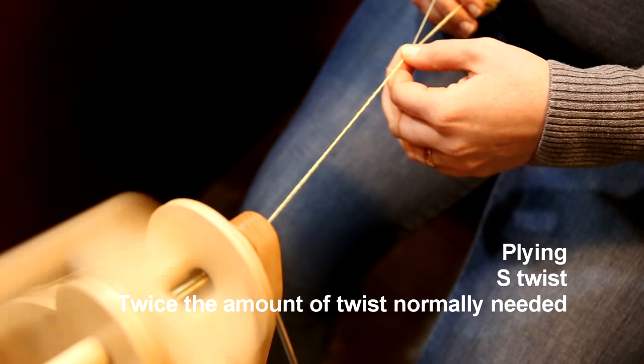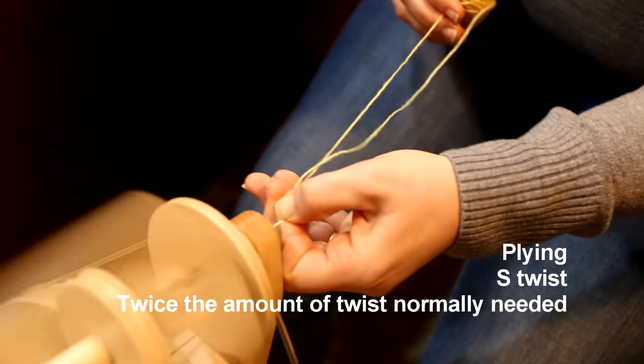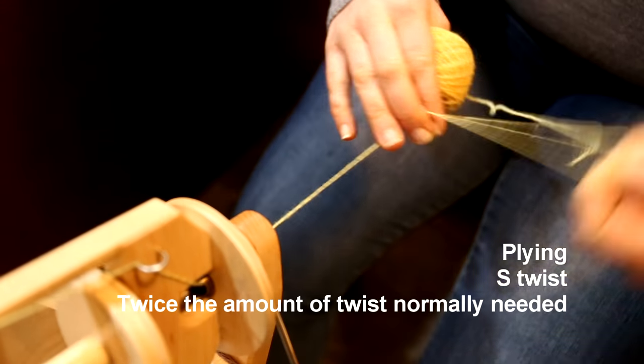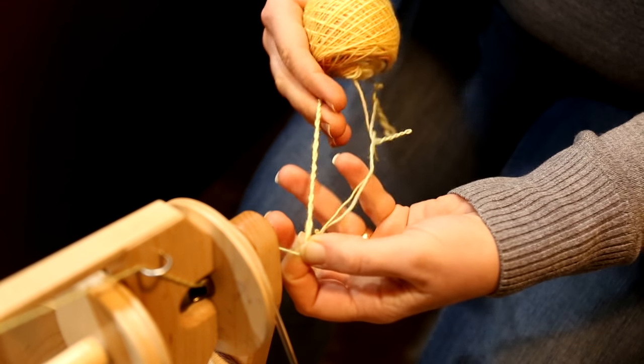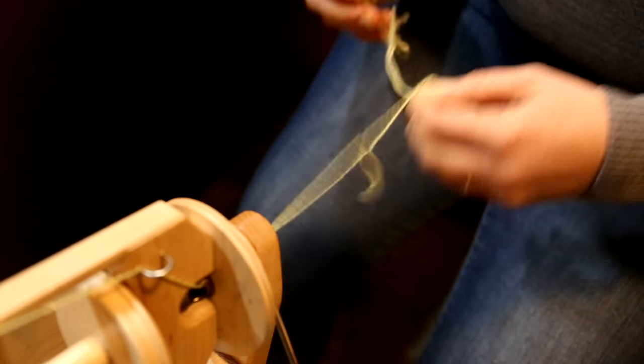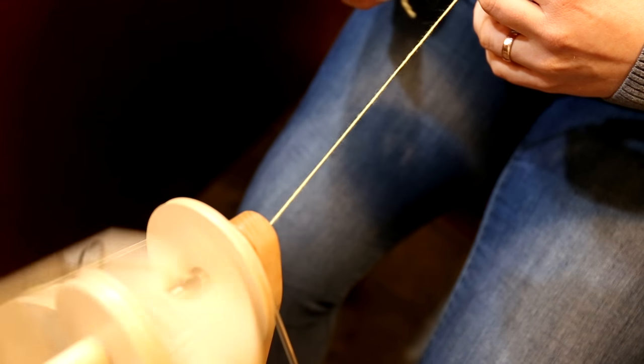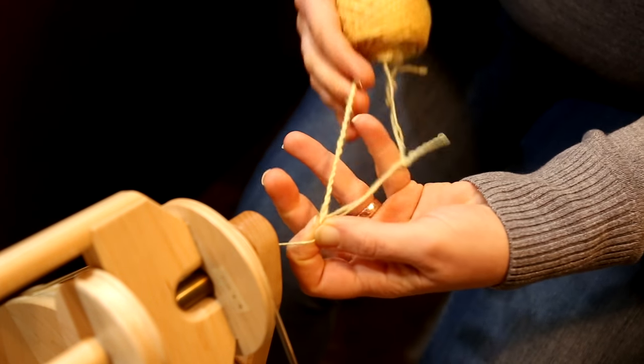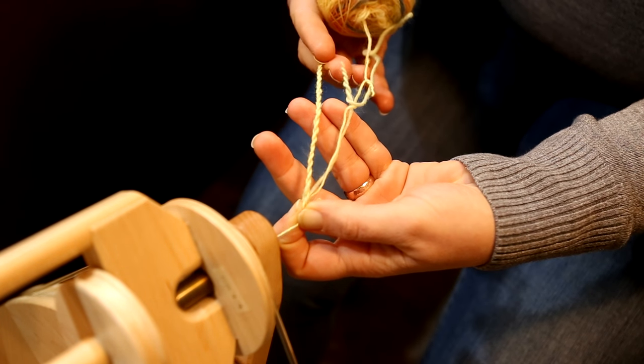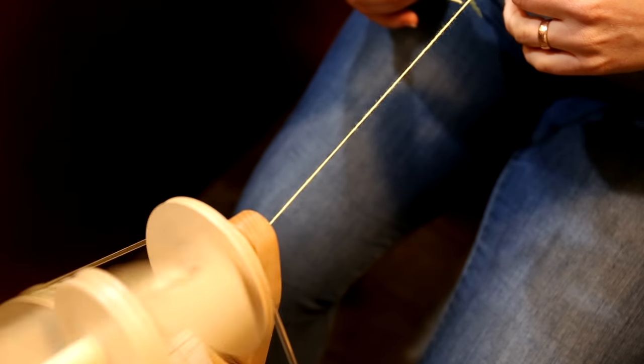All we're doing here is plying up a two-ply, so we are adding quite a bit of extra twist into our plying. You want about twice the amount of twist. There's two ways that you can do this - you can add that twist while you're plying.